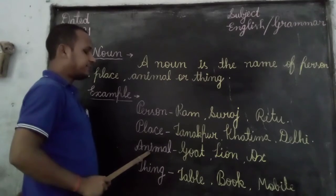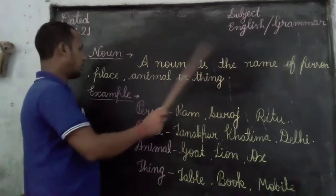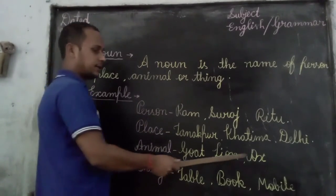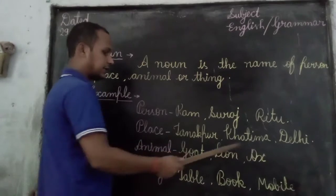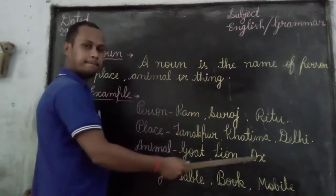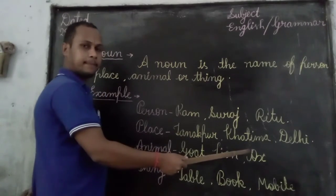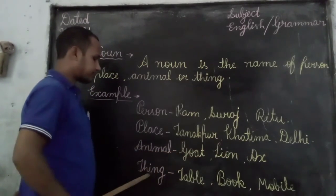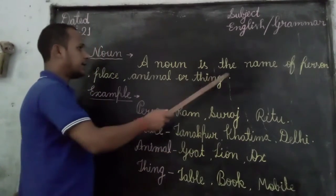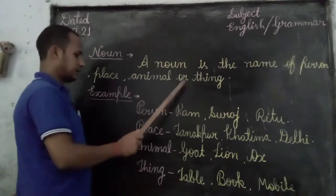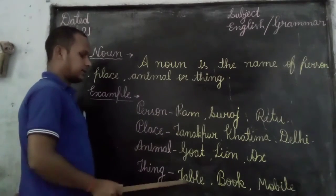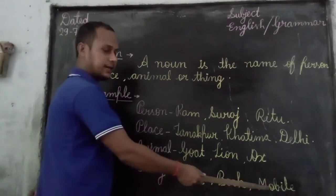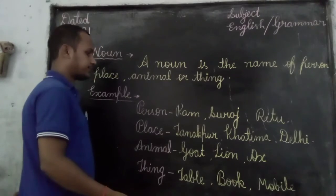Next, animal — name of animal: goat, lion, ox. These are animal's names. Name of things: table, book, mobile. These are things.